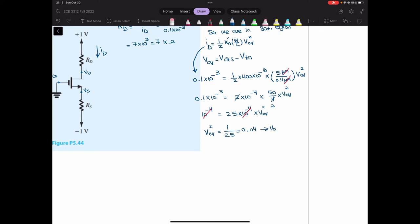So from here, VOV will be square root of 0.04. That is 0.2.